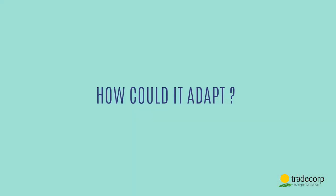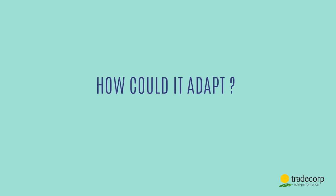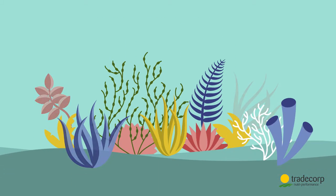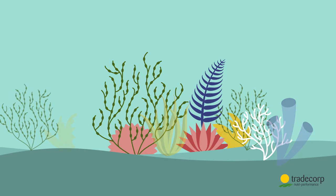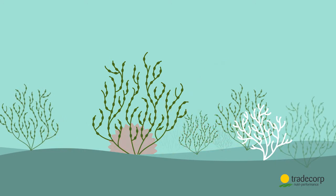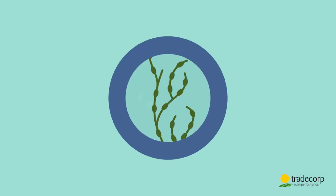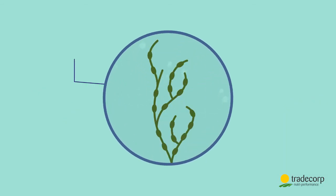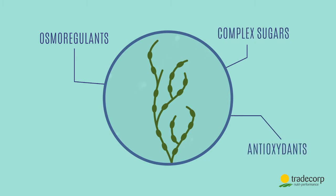But how has Ascophyllum managed to adapt? This is the result of millions of years of natural selection. The best seaweeds adapted to their environment survived and reproduced. The result? Ascophyllum is rich in osmoregulants, complex sugars, antioxidants, and trace elements.